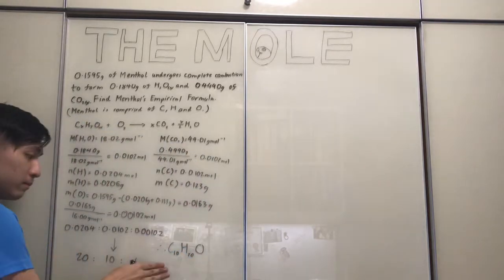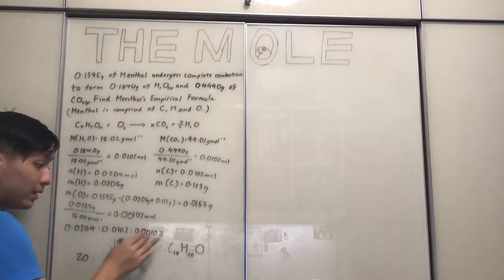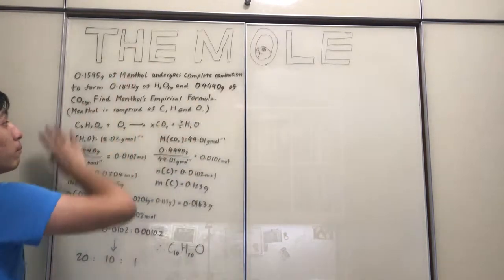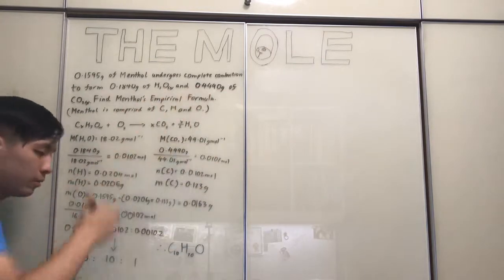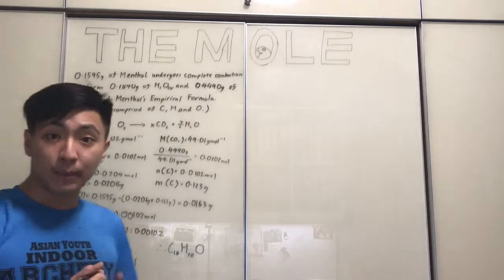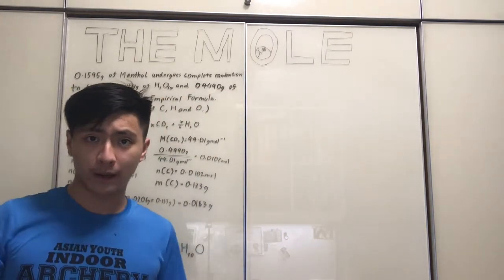Therefore the empirical formula of menthol is C10H20O. That's basically how you approach and calculate the empirical formula.